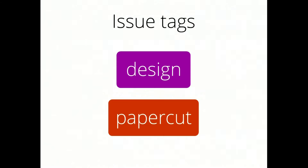On the issue tracker, we have two very important tags. One of them you probably know, which is 'design' — so every issue tagged 'design' is regarding the visual design, UX design, anything pertaining to that. And then we also have a new tag called 'papercut', which we adopted from the Ubuntu 100 Papercuts program and also from the GNOME Love project. The definition of a papercut is a small issue which comes up again and again and is very annoying.